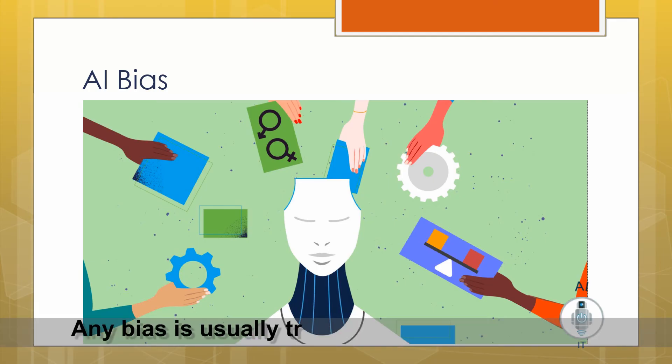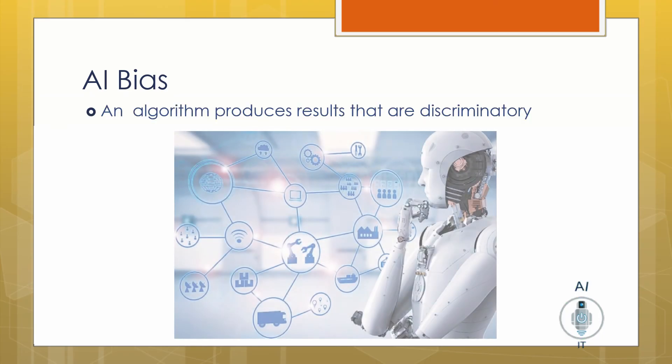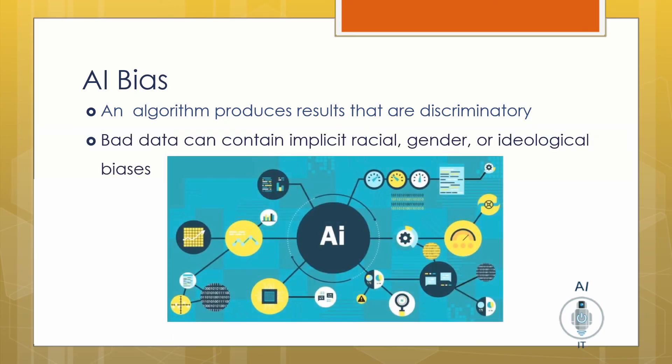Any bias is usually transferred by the programmer. Bias is a phenomenon which occurs when an algorithm produces results that are discriminatory, and usually these are due to built-in biases created by the programmer. AI machines are only as good as the data we put into them — if we put in good data, we get excellent results.